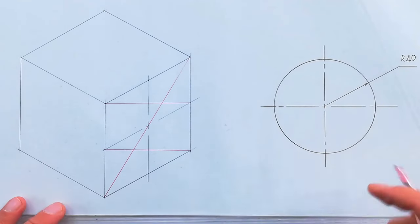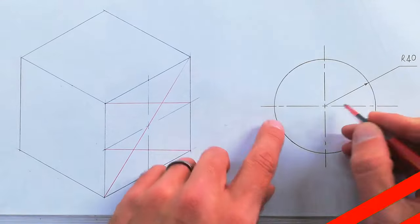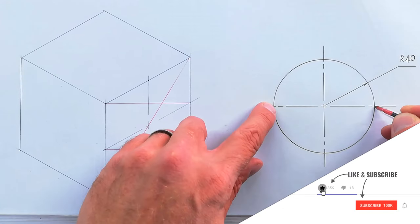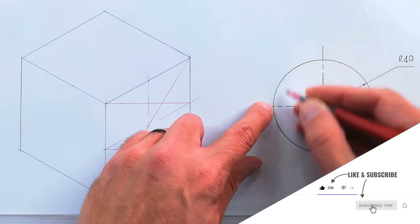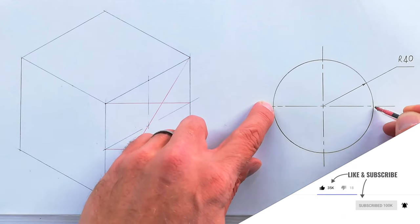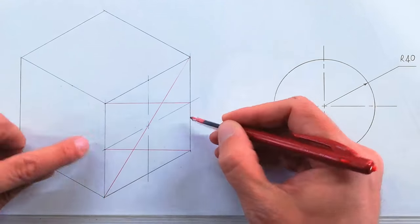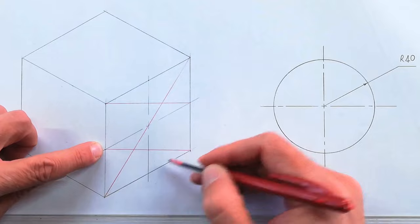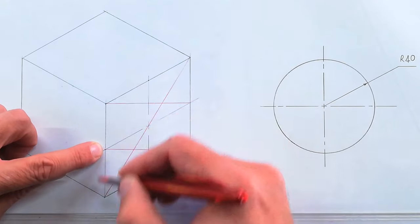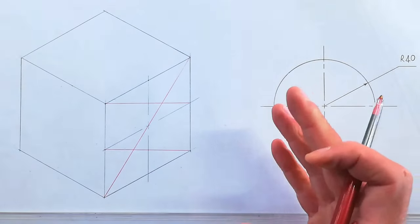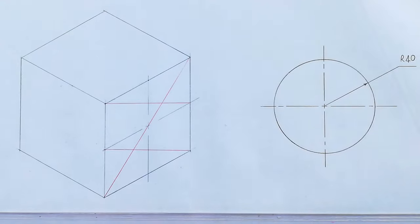This circle has a radius 40, so the diameter will be 80 all around. A circle of course fits perfectly within a square of which all sides are also equal. That's going to be your first step.